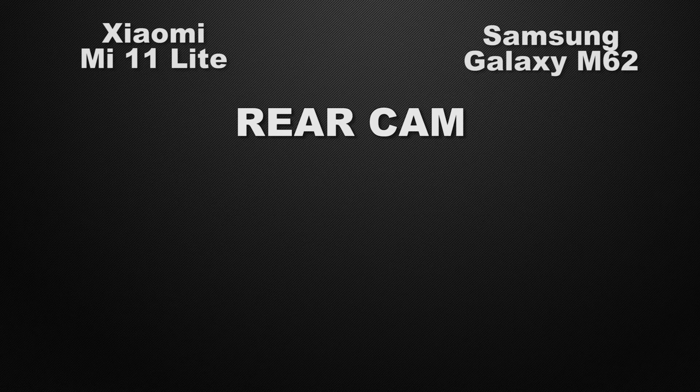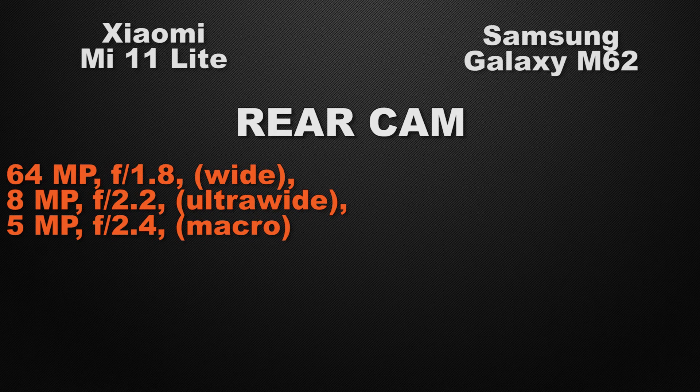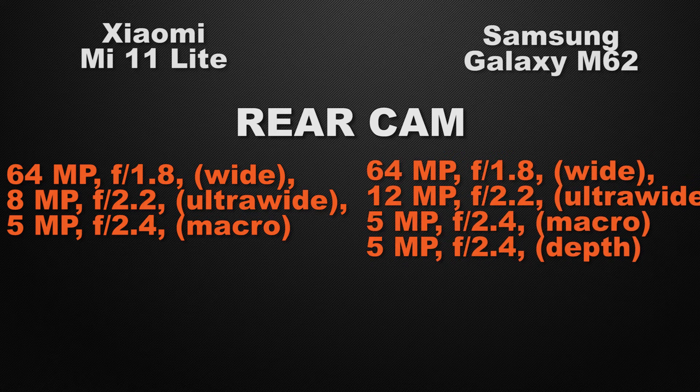Let the comparison start with the camera of the devices. Talking about the rear camera, the Mi 11 Lite has a triple camera setup: 64 megapixel wide camera, 8 megapixel ultra-wide camera, and 5 megapixel macro camera. The M62 has a quad camera setup: 64 megapixel wide, 12 megapixel ultra-wide, 5 megapixel macro, and 5 megapixel depth sensor. So the winner here is M62 because it has a quad camera setup with a depth sensor.